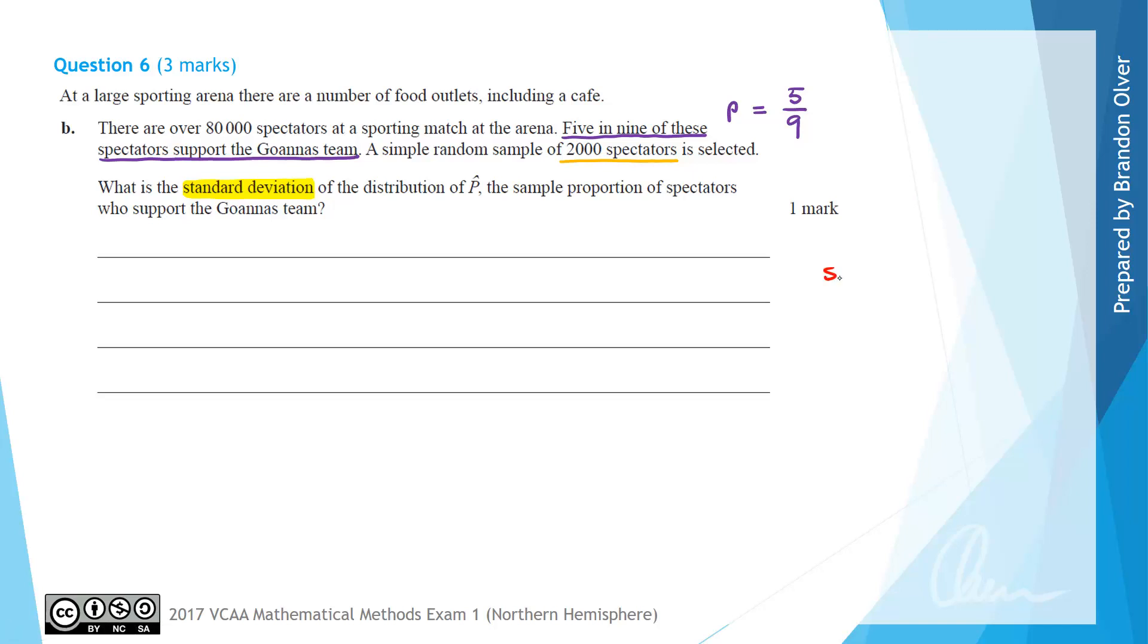From our formula sheets, there's a formula for the standard deviation of p-hat which equals the square root of p times one minus p over n. Therefore, the standard deviation of p-hat would equal the square root of five on nine times four on nine divided by n, where n for the sample is 2,000.